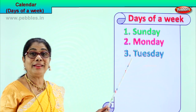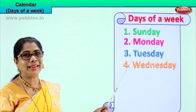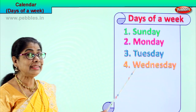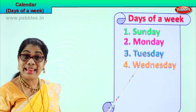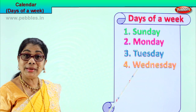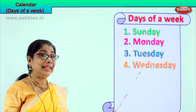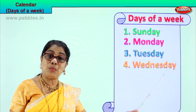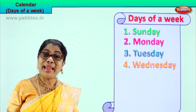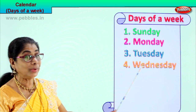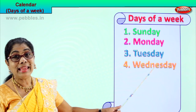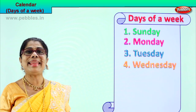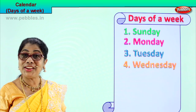Which is the fourth day of the week? The fourth day of the week is Wednesday. W-E-D-N-E-S-D-A-Y. Wednesday.